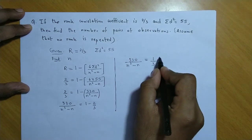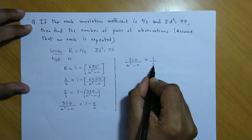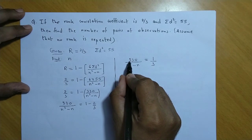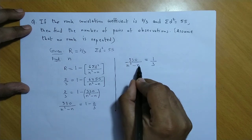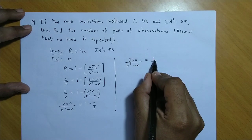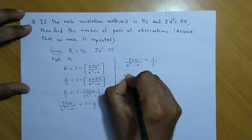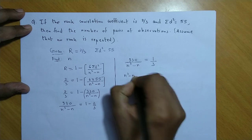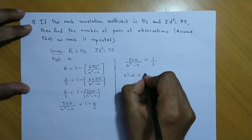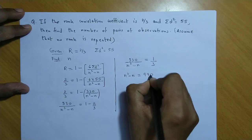So, we get 330 upon n cube minus n equal to 1 upon 3. Ab hume isse cross multiply karna hai. So, 3 into 330 ye ho jayega 990. And n cube minus 1 into n is n cube minus n. So, finally hume milta hai n cube minus n equal to 990.